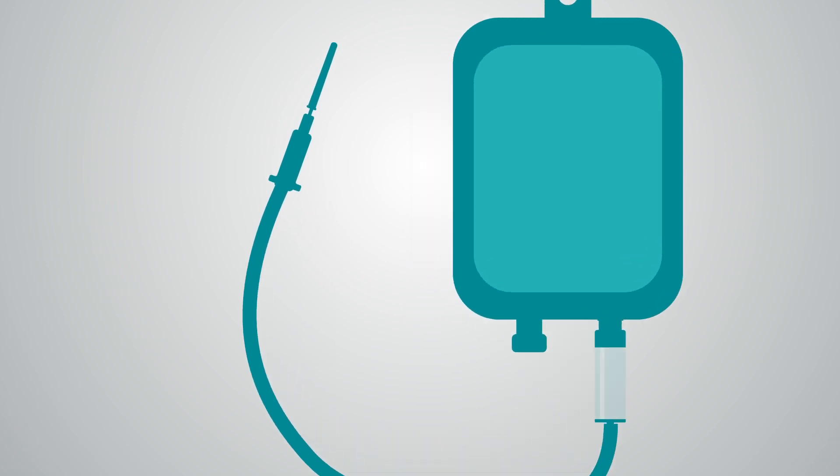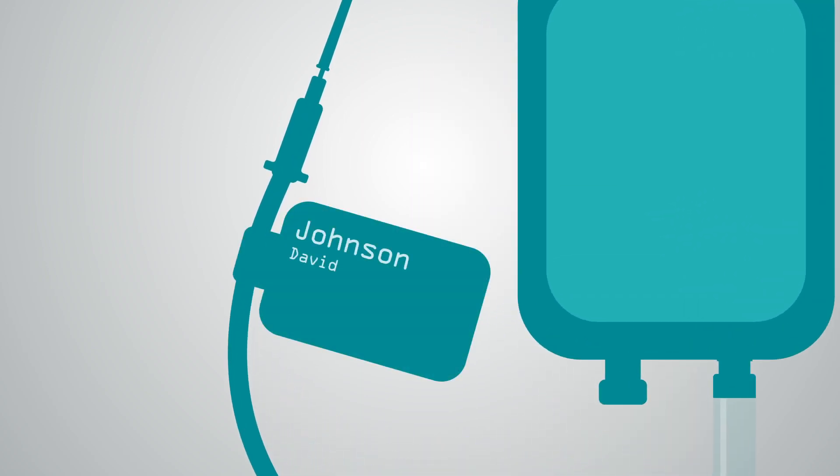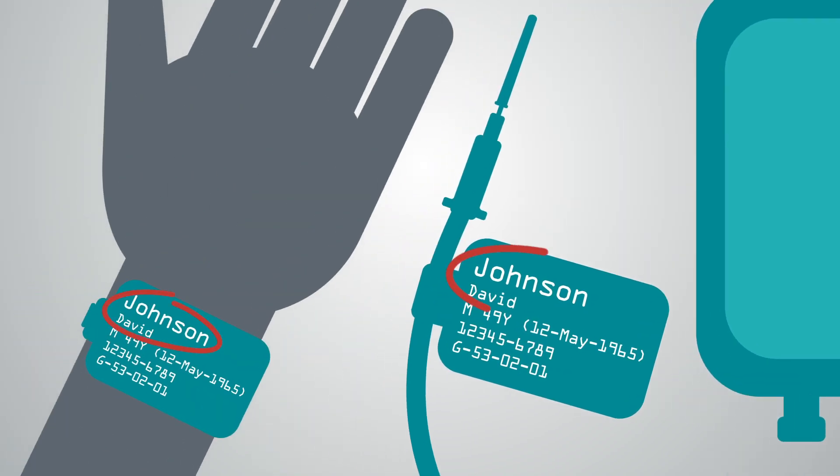Always ensure IV lines are labeled with the patient's name and one other identifier. Check this information against the patient's name and PHN.